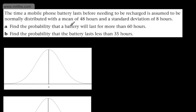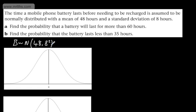In Part A we need to find the probability that the battery will last for more than 60 hours. The battery follows a normal distribution with a mean of 48 and a variance of 8 squared. Recall that the variance is standard deviation squared, so we need to find the probability that the battery lasts more than 60 hours.